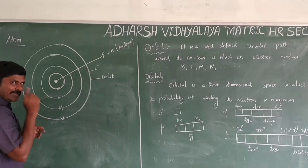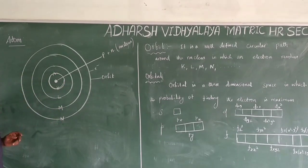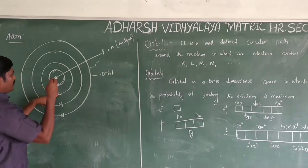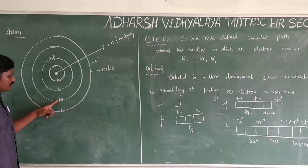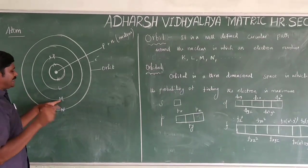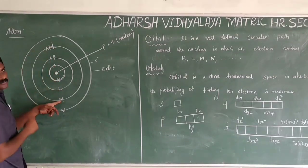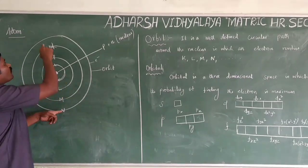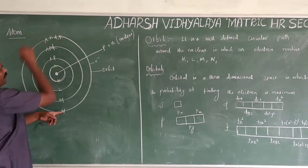The K orbit contains only one orbital: the S orbital. The L orbit contains two orbitals: S and P. The M orbit contains three orbitals: S, P, and D. The N orbit contains four orbitals: S, P, D, and F.